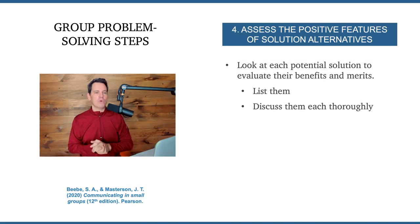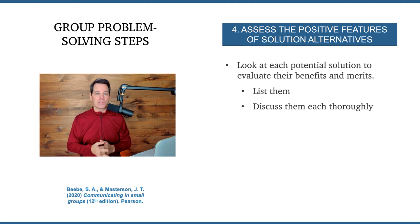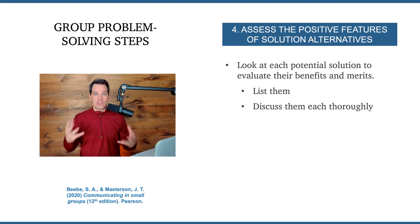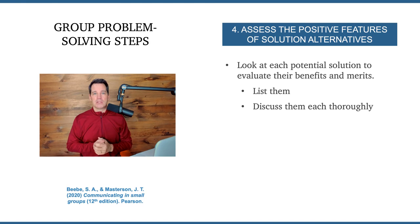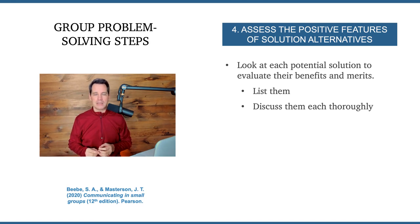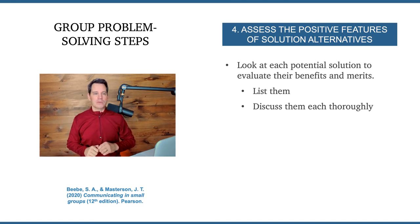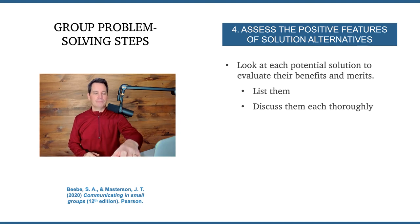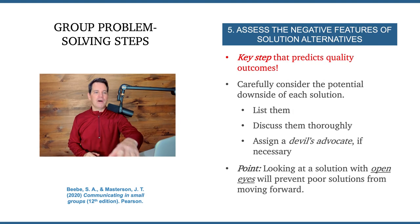Step number four: assess the positive features of the solution alternatives. Look at each solution and talk about all the potential benefits and merits of the idea. Make a list of all the ideas and thoroughly discuss all of those positive aspects of them.